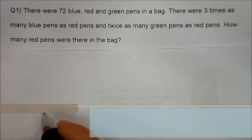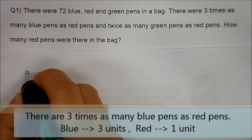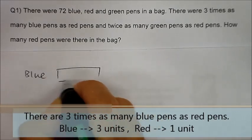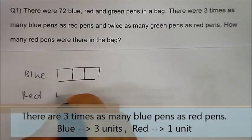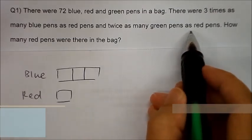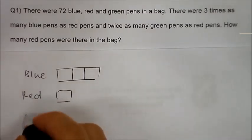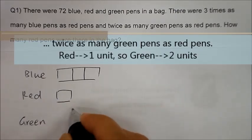There are three times as many blue pens as red pens. So for blue pens, there are three units, and red pens, there is one unit. There are twice as many green as red, so for green, twice means two units.